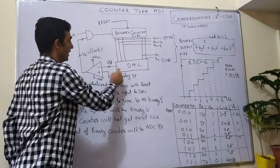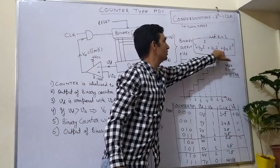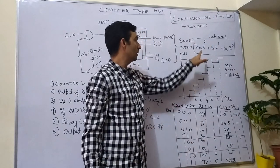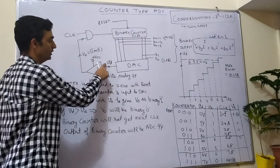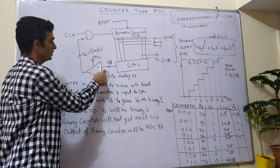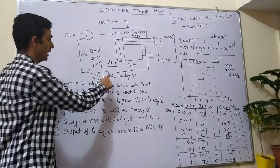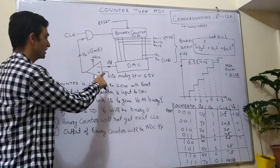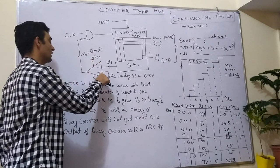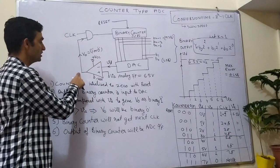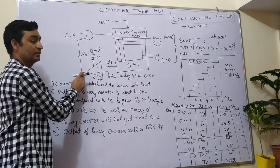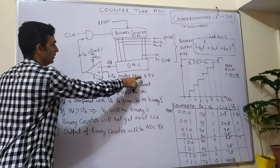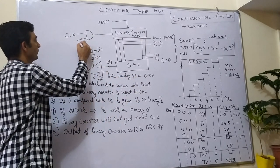Because the counter output is 000, the DAC output with b2=0, b1=0, b0=0 gives V_out = 0. Taking proportionality constant k = 1, VD = 0 volts. Now the analog input VA = 6.5 volts. Comparing 6.5 V with 0 V: the comparator output is binary 1 when the positive terminal input is higher than the negative terminal, and binary 0 when lower. So comparing 6.5 V against 0 V, the comparator output is 1.